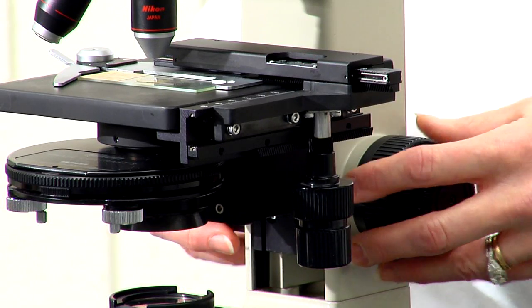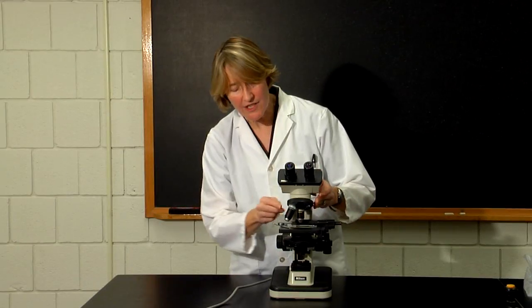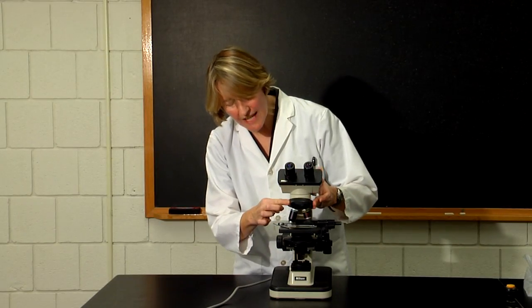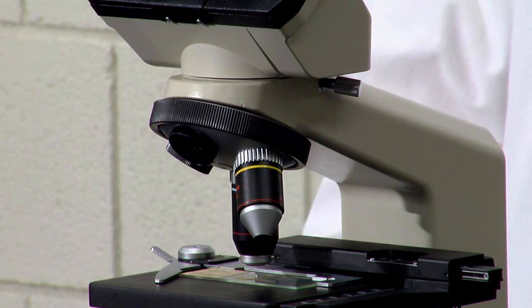The sample may not be completely in focus, but you should only need to make minor adjustments with the fine adjustment knob. Also notice that the higher power lens is longer, but once you have focused with the lower power lens, you should be able to rotate the higher power lens into position over your sample without any constraints.